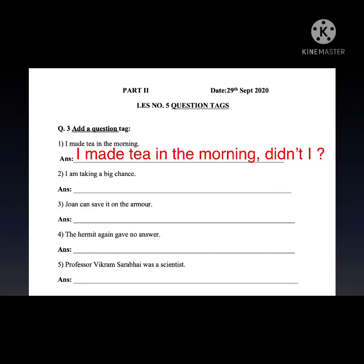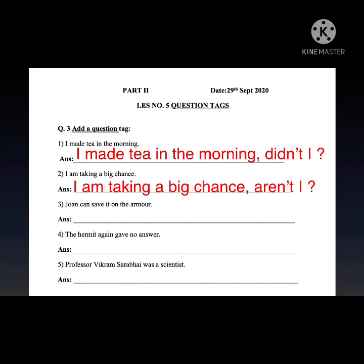We have seen in the explanation video that whenever the auxiliary verb is 'am,' we don't keep it as 'am' — we change it into 'are.' As the sentence is positive, we are going to make it negative. So the answer will be: 'I am taking a big chance, aren't I?'